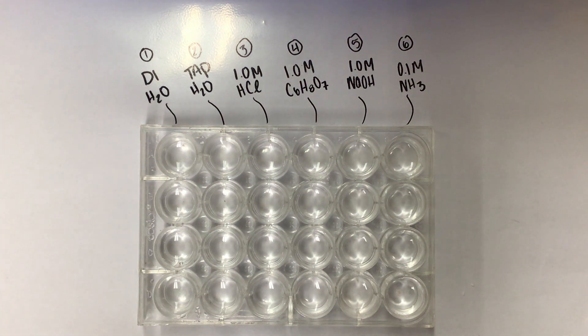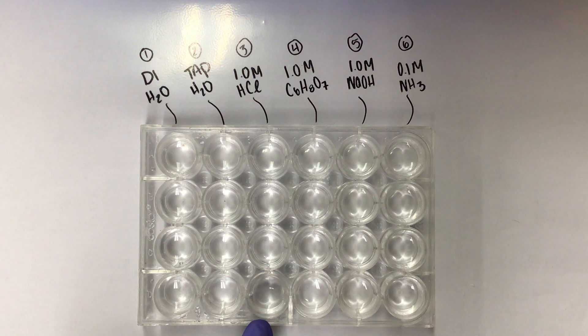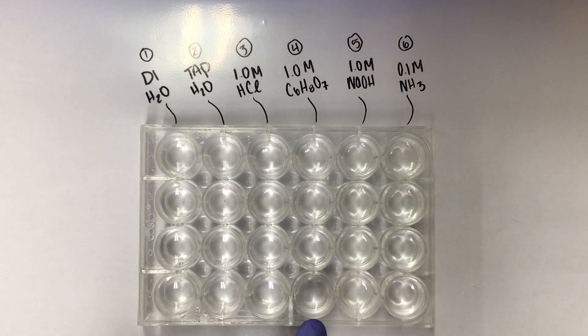I'm going to start with the conductivity indicator tests and reactivity section. In my well plate, I have DI water in the first column, tap water in the second column, 1.0 molar HCl in the third column, 1.0 molar C6H8O7 in the fourth column, 1.0 molar NaOH in the fifth column, and 0.1 molar NH3 in the last column.